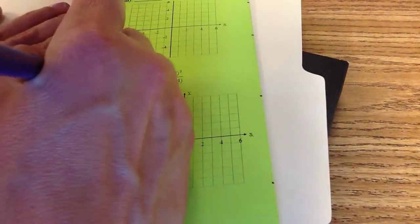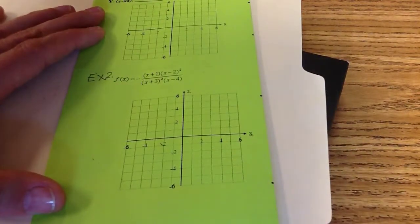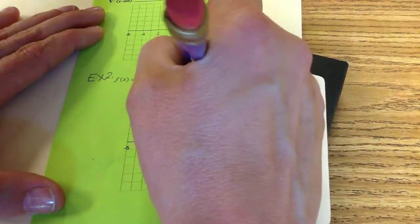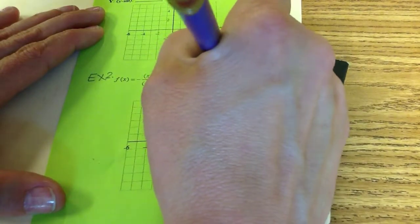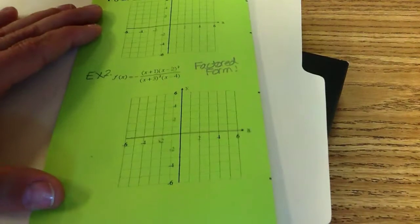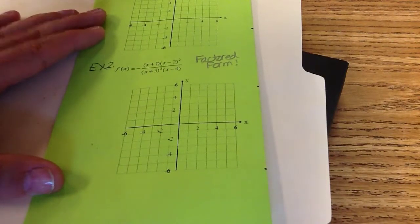So we're going to go ahead and do example number two off of your foldable. Now example number two is a little bit different because it is in factored form. So what happens when it's in factored form is a step is saved for us. We don't have to do all the factoring that we normally do.